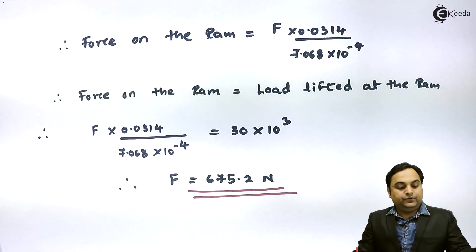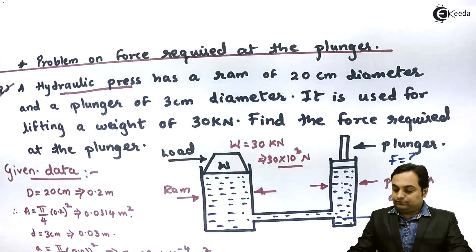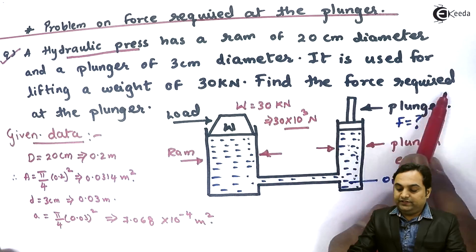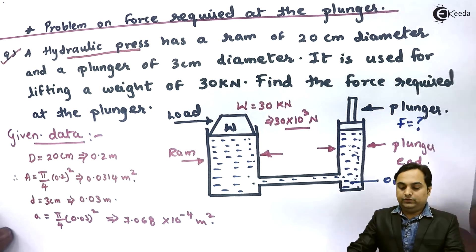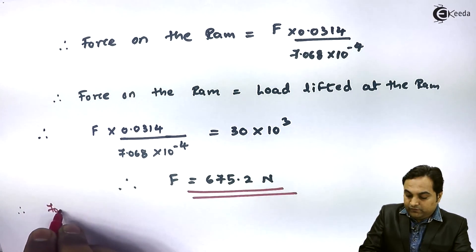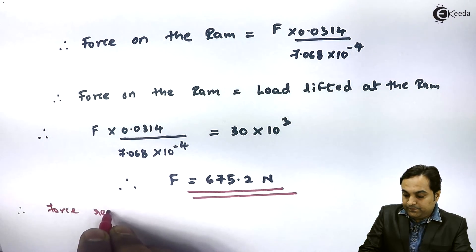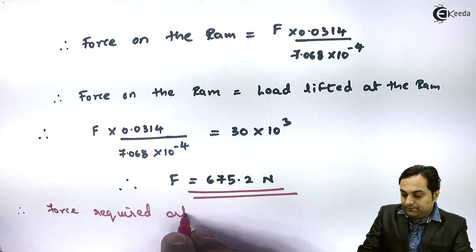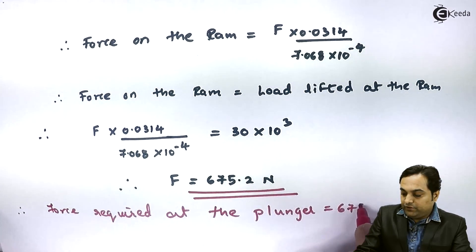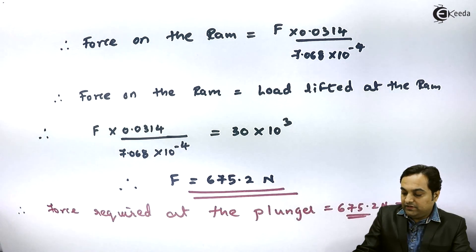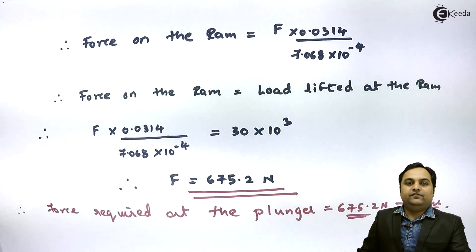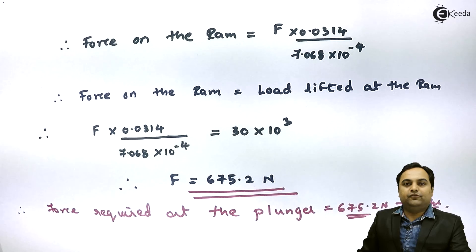F was denoted as the force required at the plunger, and the question asked us to find that force. Therefore, the force required at the plunger = 675.2 Newton. This is our answer. In this video, we have calculated the force required at the plunger for a hydraulic press.